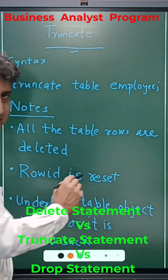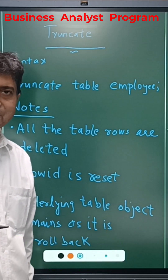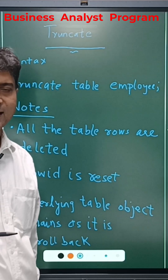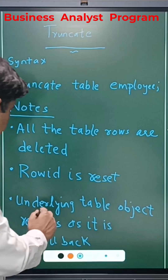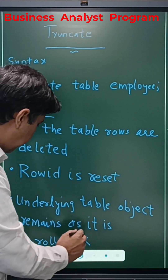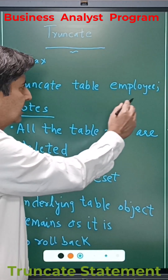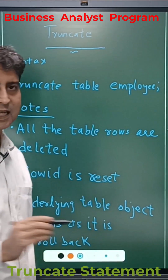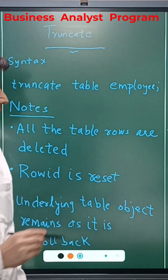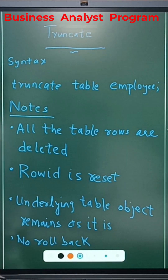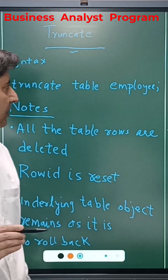The row ID is reset, as if the whole table has been refreshed and is now a brand new vacant table, as if the table object has just been created in the database. The underlying table object — for example, the employee table — remains in the schema. Rollback is not possible for the truncate statement, whereas rollback is available for the delete statement.